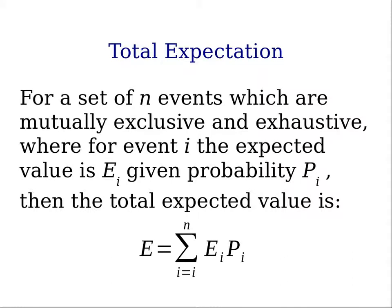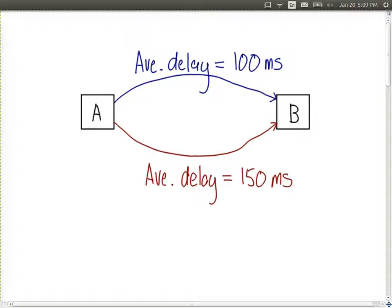Let's look at an example of total expectation. Consider a communications network. We have two computers, A and B. A wants to send packets to computer B. In this network, let's say there are just two paths to send packets.